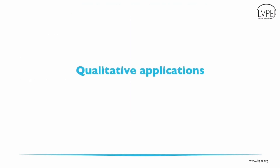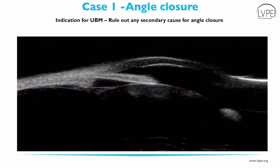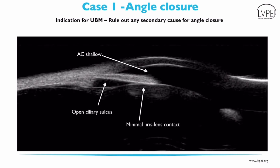Now let's look at the qualitative applications of UBM, beginning with applications in cases of glaucoma. This patient presented with chief complaints of painful loss of vision in the left eye. UBM showed the anterior chamber was shallow with minimal iris-to-lens contact. The ciliary sulcus is open and there is no rotation of the ciliary body. Therefore, UBM helped in confirming the diagnosis as primary acute angle closure attack by ruling out causes for secondary angle closure such as aqueous misdirection syndrome or swelling of the ciliary body.